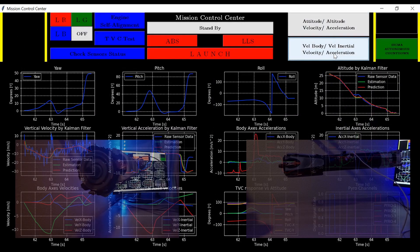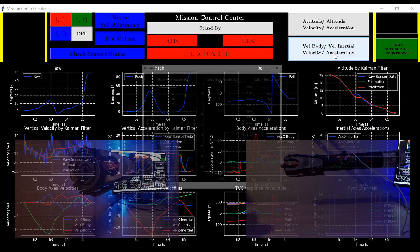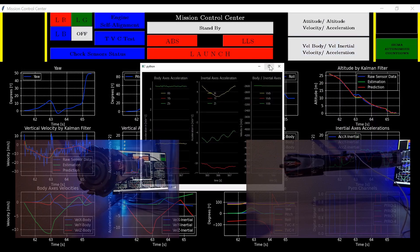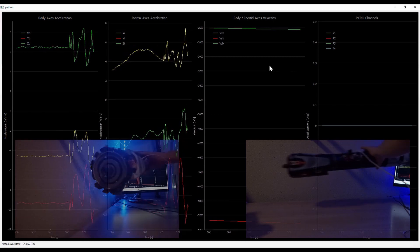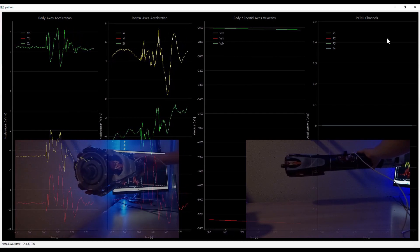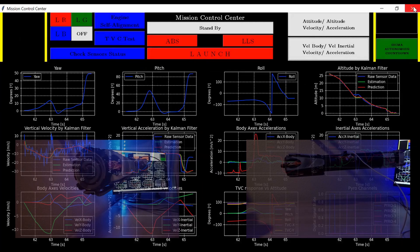Oh yeah, I almost forgot. The software is logging all the data, so at this point the redundancy of the systems is maximum. As the rocket stores to a SD card, the software to a CSV file and also we can retrieve the data from the Python console.